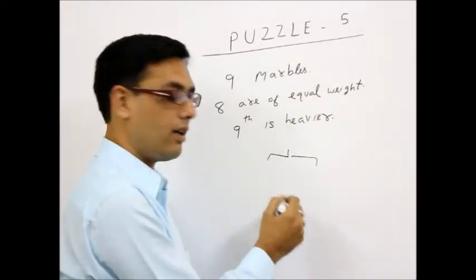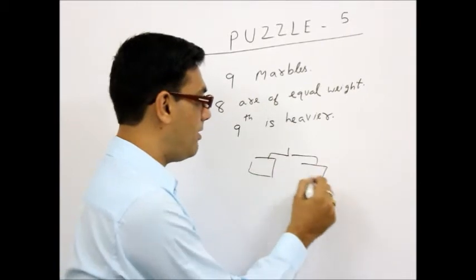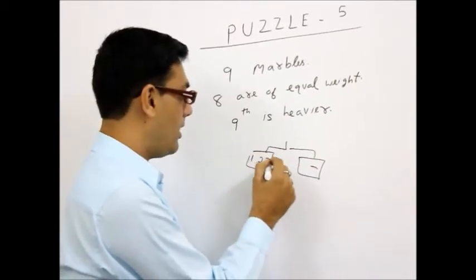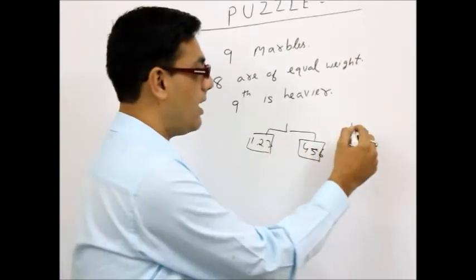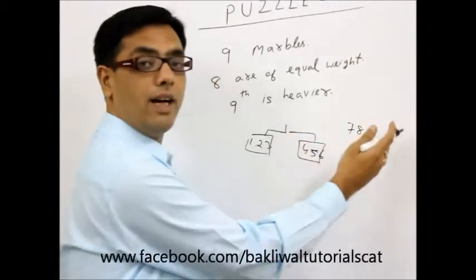In the first reading, we will put 3 marbles here and 3 marbles here. Let's say I have numbered the marbles 1, 2, 3, 4, 5, 6 and 7, 8, 9 I am keeping aside.